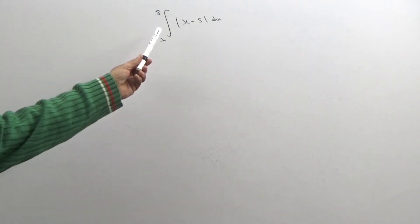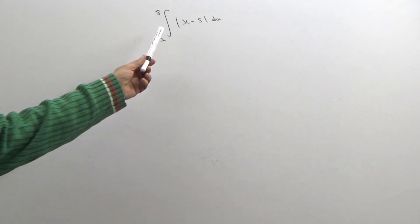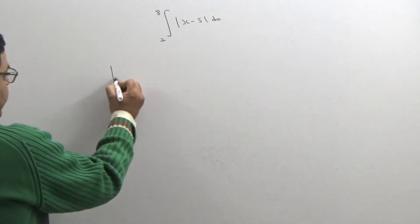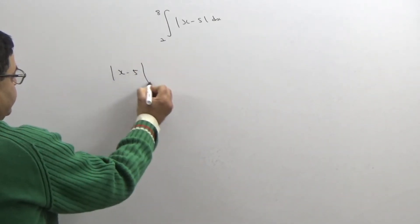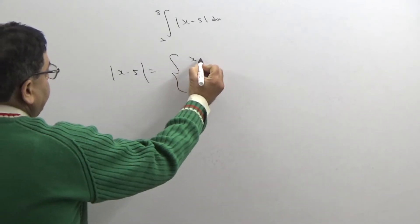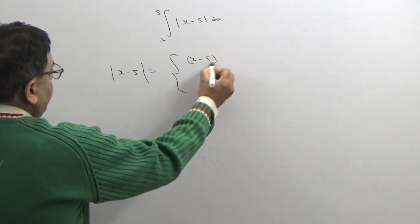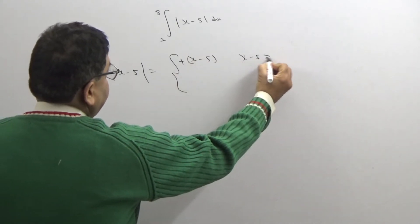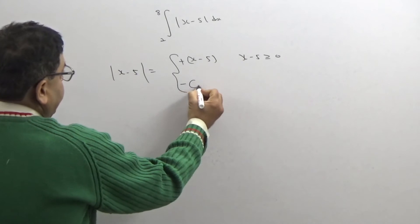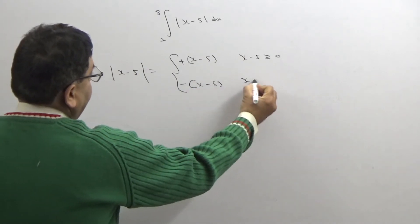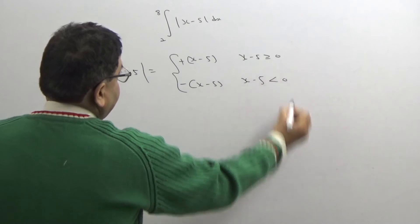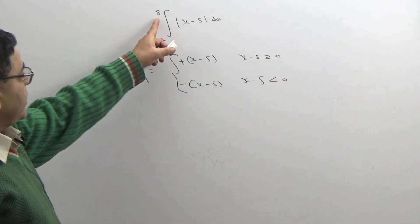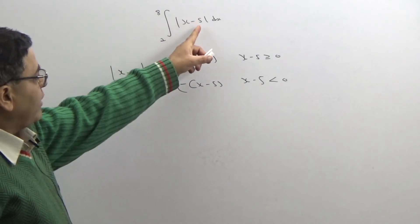Now, |x−5| can be defined as: it equals −(x−5) when x−5 is less than 0, and (x−5) when x−5 is greater than or equal to 0. You can see the lower limit is 2 and the upper limit is 8, and our critical point or breaking point is 5.